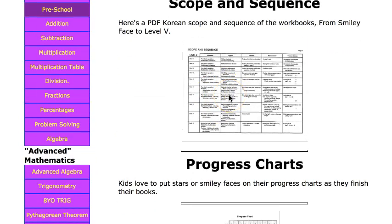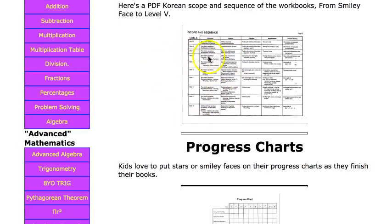Scope and Sequence. If you have the workbooks from Mortensen Math, these will tell you what each one covers and where you can find, for example, factoring polynomials. It'll be here.